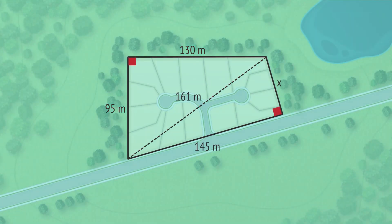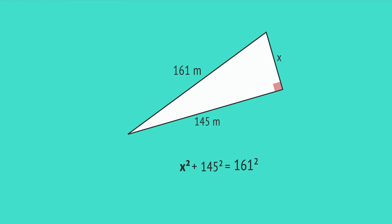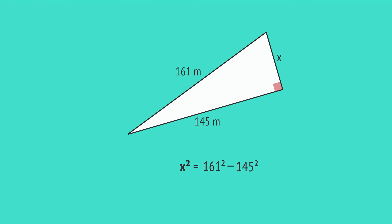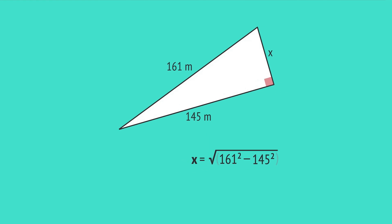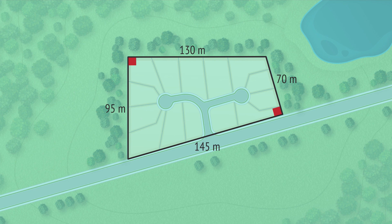With this answer, we now know two lengths in the bottom triangle, and we use this triangle to calculate the unknown dimension x, one of the shorter sides. Substitute these values into the formula, subtract 145 squared from both sides to get x squared by itself, take the square root, and enter this into a calculator. The result is x equals 70 metres, so the unknown boundary dimension is 70 metres.